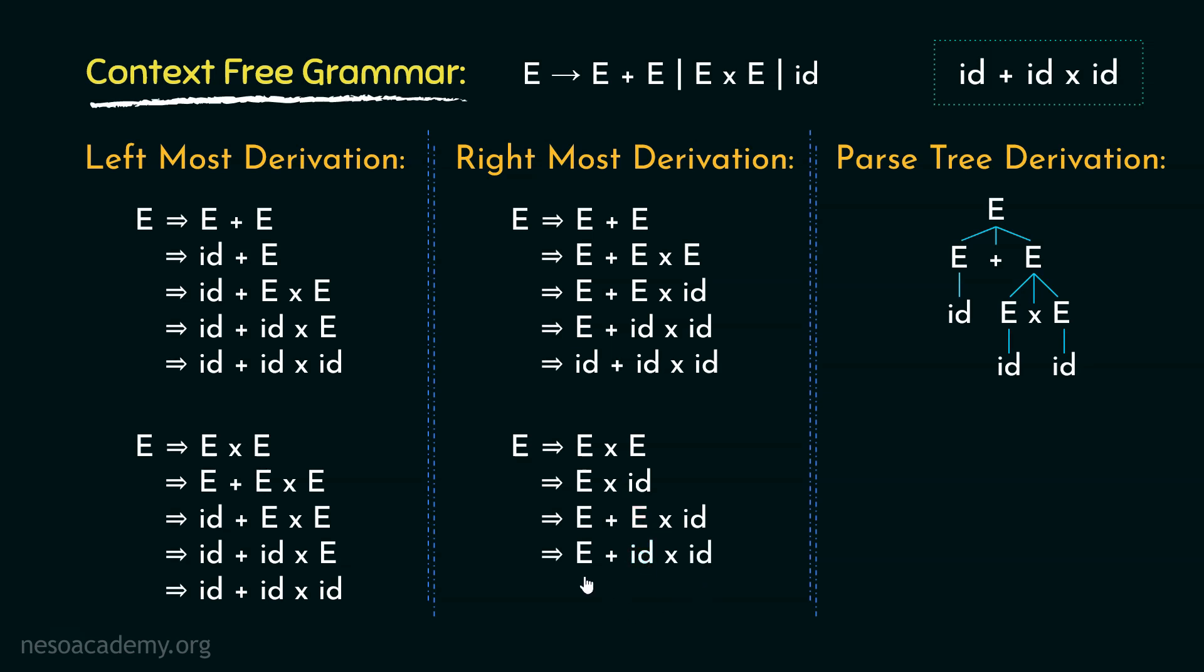So we are almost there. Now all we have to do is expand the only E. So finally we will derive id + id × id and this is the intended string. So similar to the leftmost derivation, there are more than one rightmost derivation for the same string.